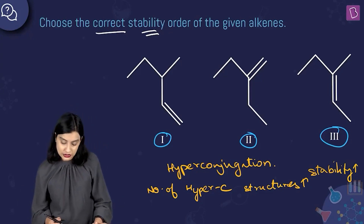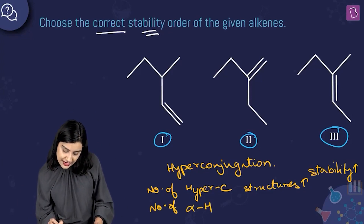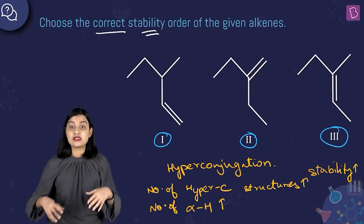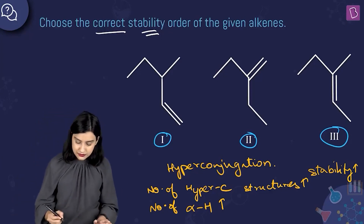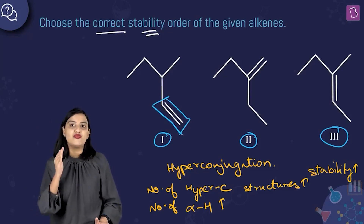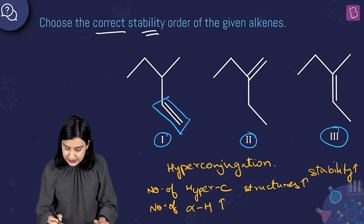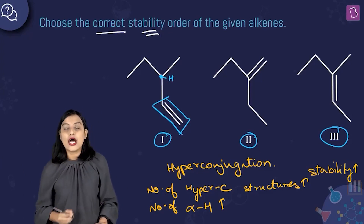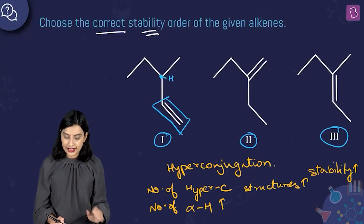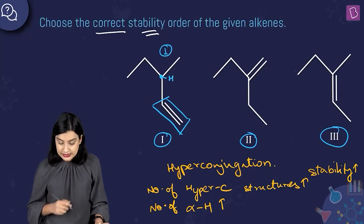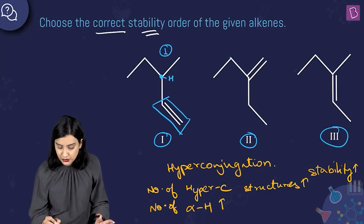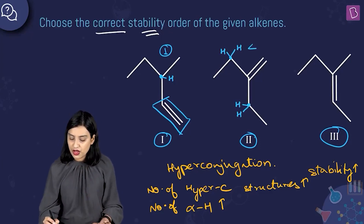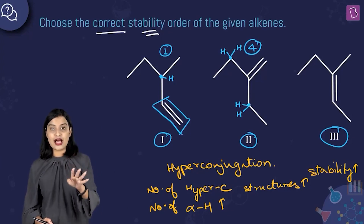The number of hyperconjugating structures increases with the number of alpha hydrogens. In structure one, the alpha carbon has one hydrogen, so there is one alpha hydrogen. In structure two, the alpha carbons are on both sides of the double bond: you have two hydrogens on one side and two on the other, giving a total of four alpha hydrogens.